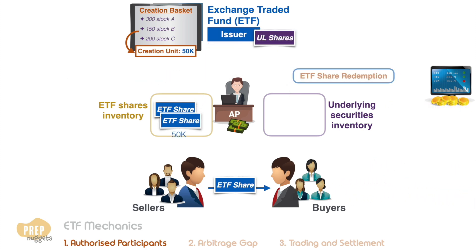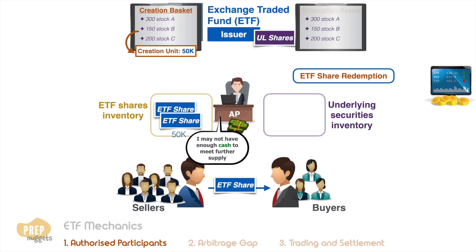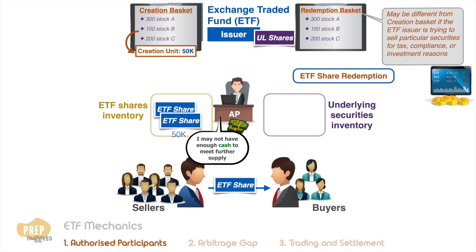The redemption process is the opposite. If the AP feels that it is holding too many ETF shares and there is insufficient cash to meet more supply, the AP may choose to return the excess ETF shares to the issuer. Likewise, the issuer publishes a redemption basket list. This list is usually the same as the creation basket, but it may be different if the ETF issuer is trying to sell particular securities for tax, compliance, or investment reasons.